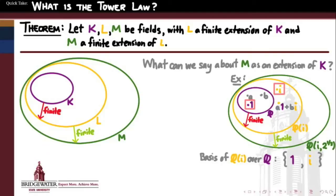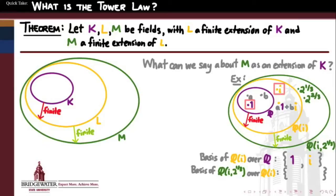Now let's adjoin the real cube root of 2 to the Gaussian rationals, to get the biggest extended field M = Q(i, ∛2). A generic element can be written as a linear combination of 1, the cube root of 2, and the cube root of 4 (2 to the 2/3), where the coefficients C, D, and E are taken from Q(i) — they're Gaussian rational numbers. So a basis for the biggest field over the intermediate field is {1, 2^(1/3), 2^(2/3)}.